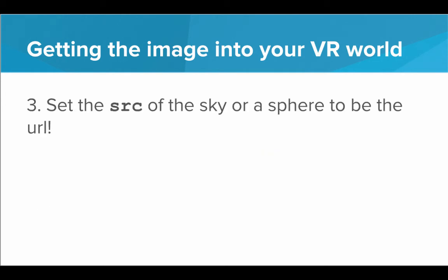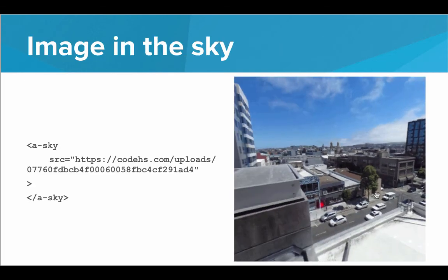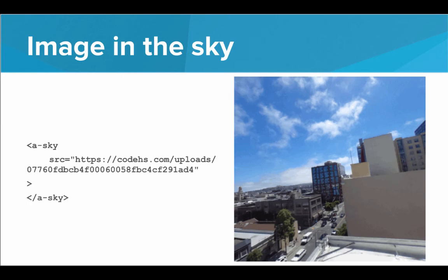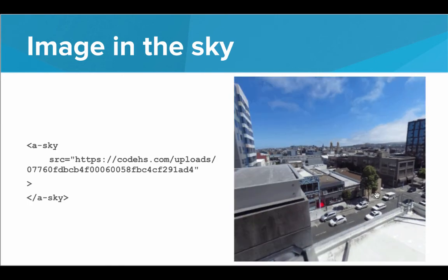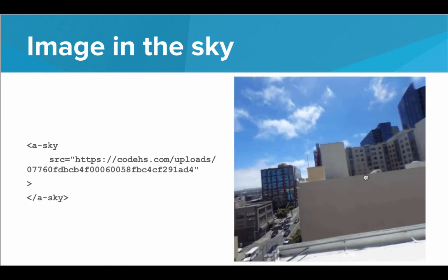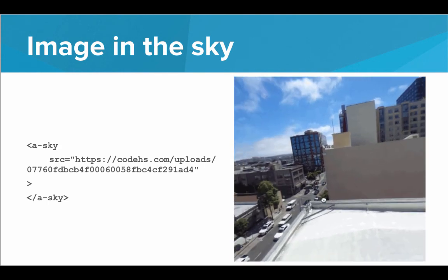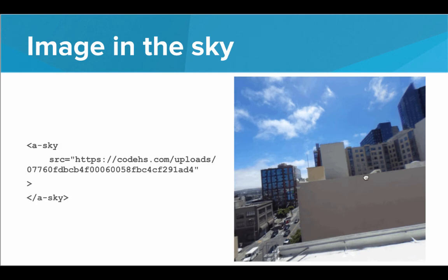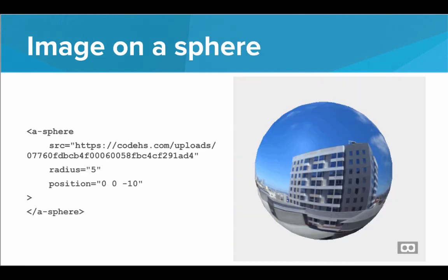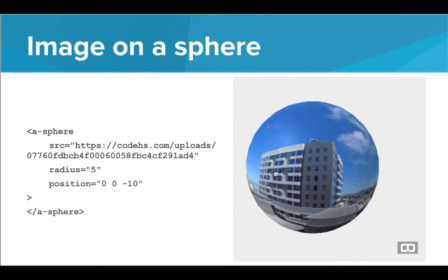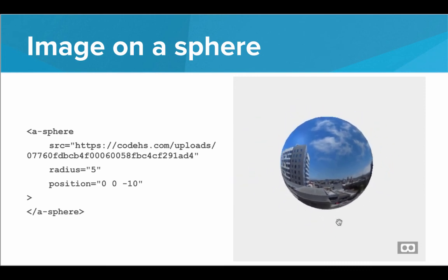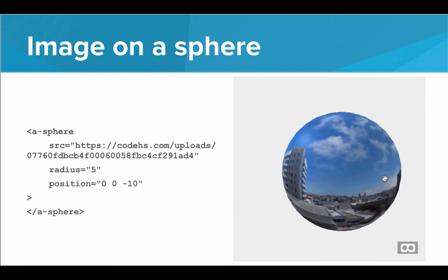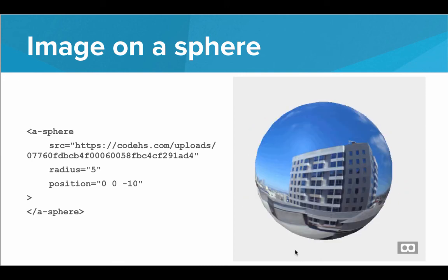Once we have that URL, all we need to do is set the SRC attribute of either a sky or a sphere to be that URL, and we have that image in our VR program. Here's an example of setting the SRC of the sky to be a 360 degree image — it projects the image onto a massive sphere on the inside, so it's like you're standing in the middle of a huge sphere looking around at the image. Another option is to put the image on the outside of a smaller sphere by setting the SRC attribute on that sphere to the URL of your image, and it will wrap that image around the sphere.